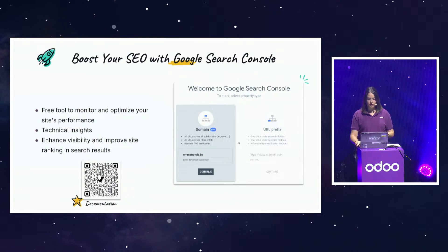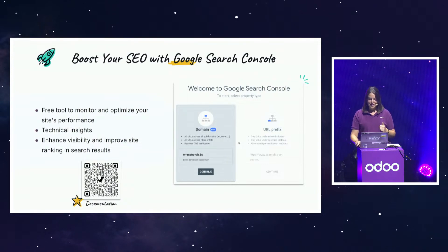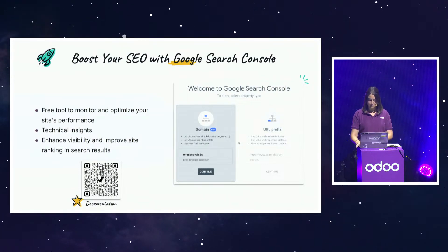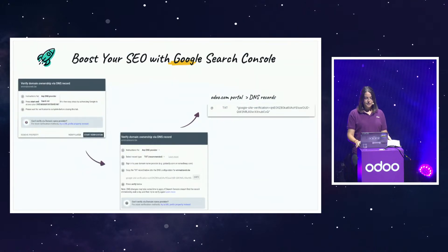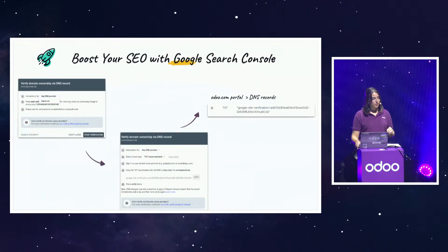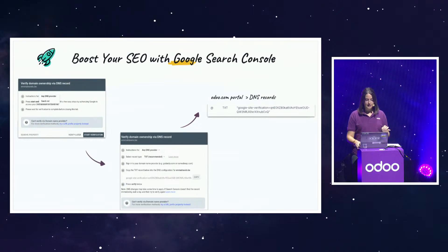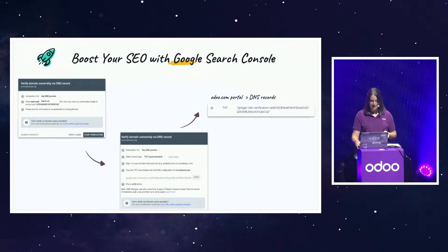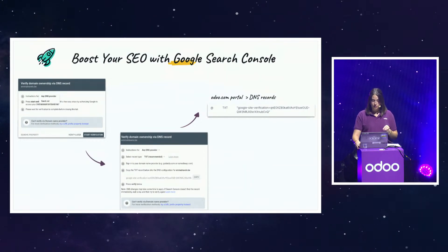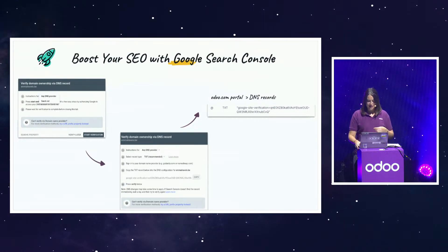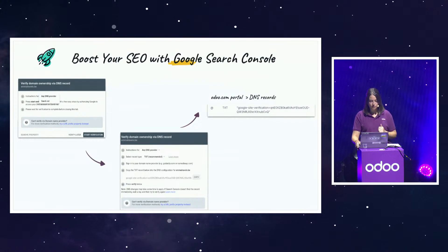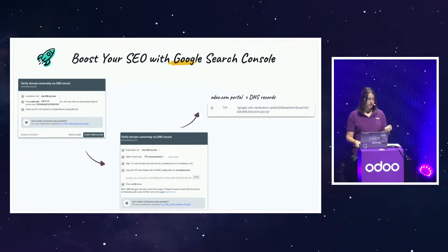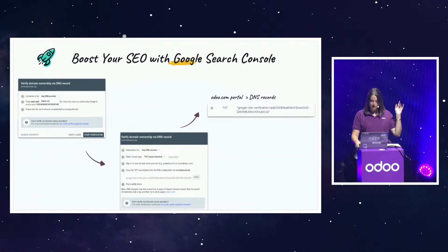To start the configuration, type Google Search Console in Google, connect, and register the domain via the Domain tab, as shown on the slide. The second step is to verify the domain ownership. The easiest way to do this for your free domain is by adding a TXT record on your odoo.com portal. You just need to copy-paste the record that Google gives you and create a new TXT record. Then click Verify and wait for Google to confirm that the verification is successful, as you can see on the slide.